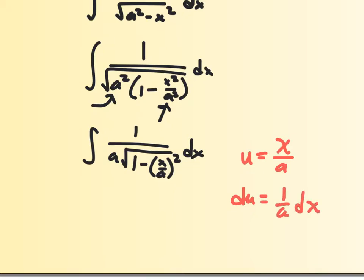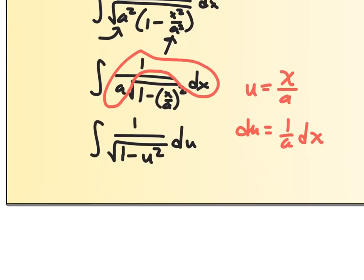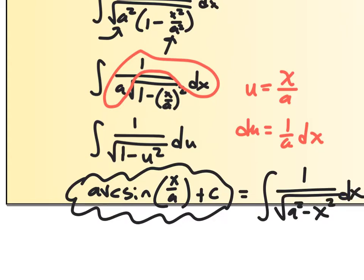That's awesome because here I have 1 over a dx. Therefore, I can call this integral 1 over the square root of 1 minus u squared du, which is in perfect form. That gives arcsin(u), and since u is x over a, the result is arcsin(x/a) plus c. So what that tells us is that the integral of 1 over the square root of a squared minus x squared dx equals arcsin(x/a) plus c — and we can use that shortcut.